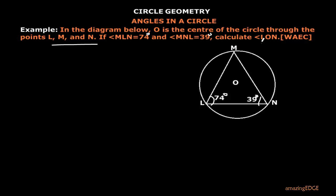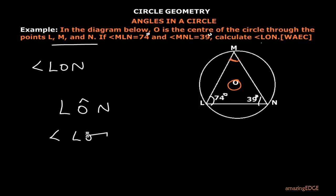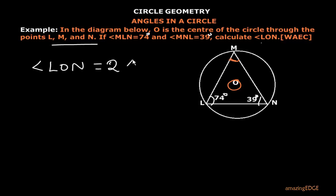Applying our theorem, the angle at the center is two times the angle at any point on the circumference. So angle LON should equal two times angle LMN. The notation may vary — some write it with a cap at the center vertex — but either way, angle LON equals two times angle LMN. Now we need to find angle LMN.